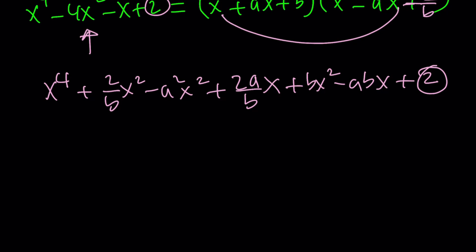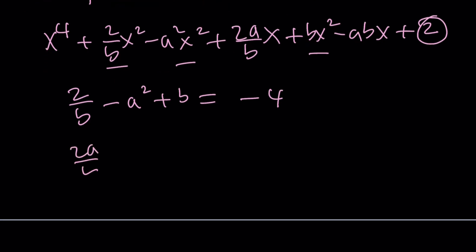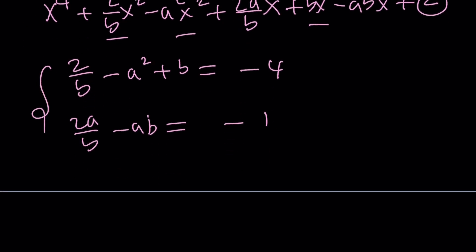But what does that mean? Let's go ahead and put these together. The coefficient of x squared is 2 over b minus a squared plus b. And then that is equal to this, this, and that. In the original equation, that's equal to minus 4. And then we have the x term, which is 2a over b minus ab. And that's the coefficient of x, which is equal to negative 1. And then the constant is the constant. Make sense? So we kind of have like two variables and two equations, so actually solvable, right?